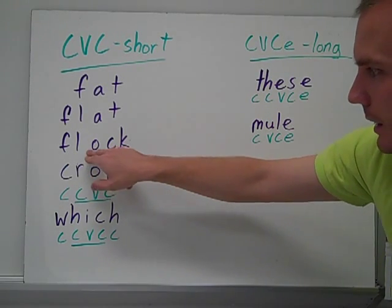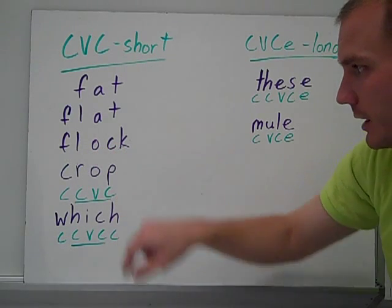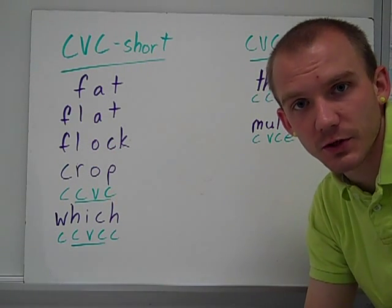Look at the word flock. Different vowel, but still, consonant on either side. Flock. So you have a short o.